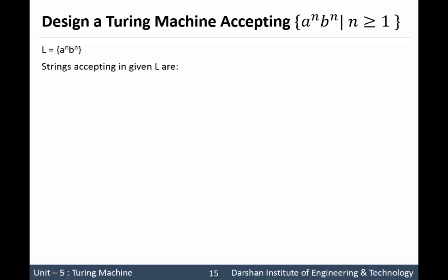Some strings accepted in the given language L are: 1 a followed by 1 b, 2 occurrences of a followed by 2 occurrences of b, and 3 a's followed by 3 b's. So the number of a's is exactly the same as the number of b's, and a is followed by b. Now let us see the logic to implement a^n b^n.